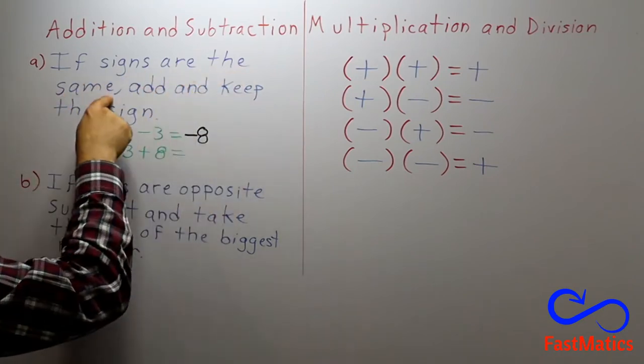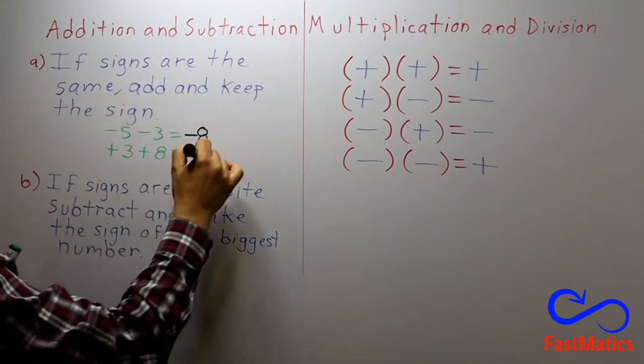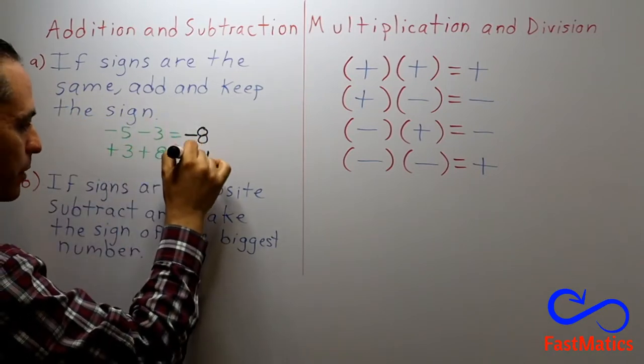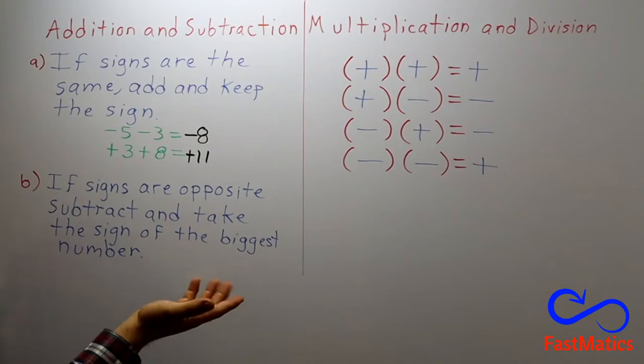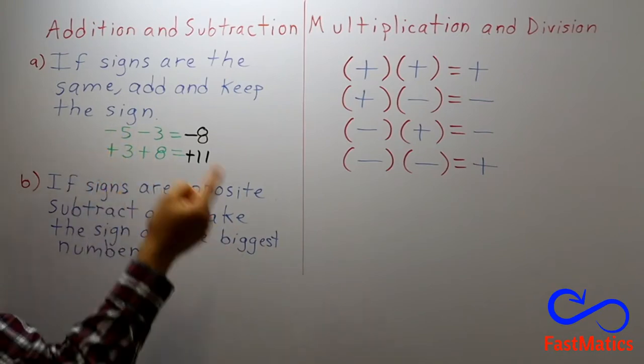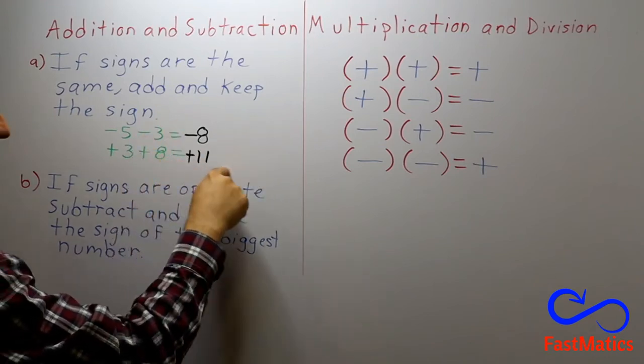So, signs are the same. Then add three plus eight, eleven, and keep the sign. We keep the positive sign. That is, I earned three dollars, I earned eight dollars, so I earned eleven dollars.